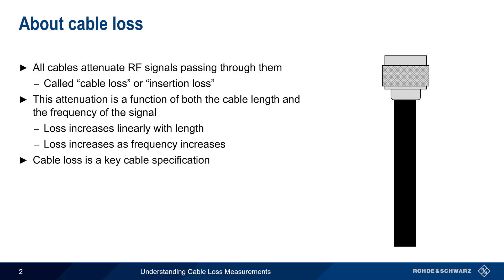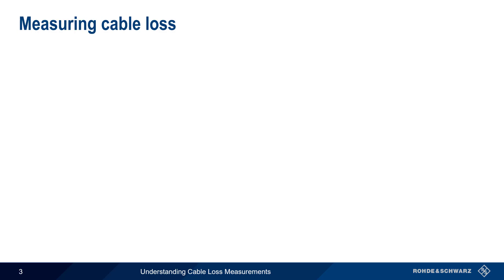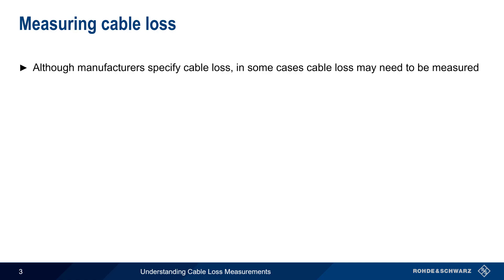Cable loss is a key manufacturer specification. It's normally given as X dB of loss per meter or foot, and frequency-dependent loss is indicated using tables and/or graphs. Knowing the amount of power lost in a cable is very important for many radio frequency applications. Although manufacturers specify cable loss, in some cases cable loss may need to be measured.